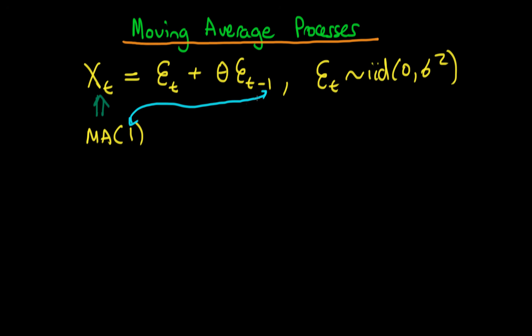A moving average of order 2 process would also have, as well as the first lagged error, a term which includes the second lagged error. So this is our first example of a time series process.